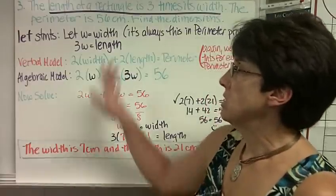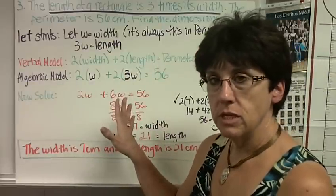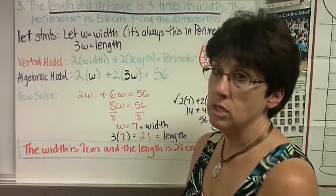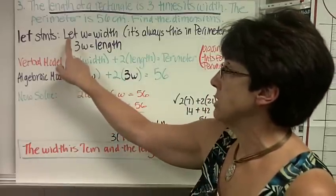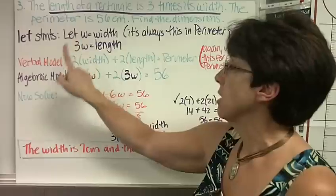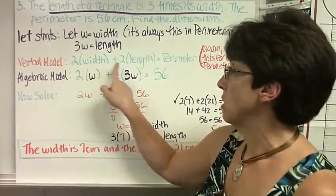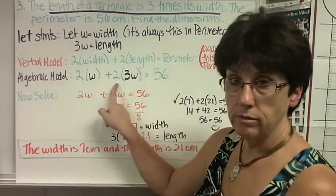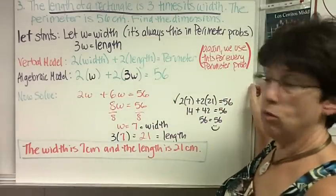So this problem is a little bit different than the others, because you don't look to see who you know the least about, because 99.9% of the time, you will know the least about the width. So you always say, let W equal width, and then figure out what I'm telling you about the length. Your verbal model is always 2 times the width plus 2 times the length equals the perimeter, so you can substitute in. One more problem.